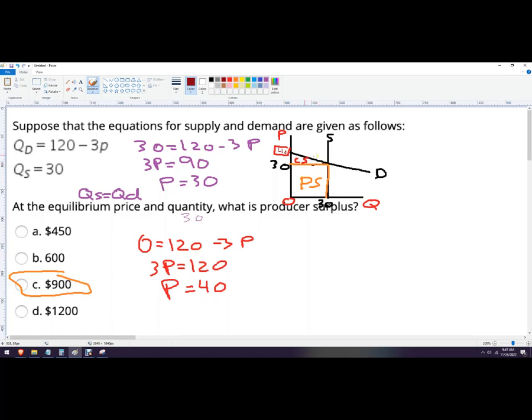So the consumer surplus is the area of this triangle. So if I were to write it all out, it would be 40 minus 30. It's the difference between what they're willing to pay and what they actually pay. And I'm going to multiply that part by 30, the number of units in the market. So this is 10 times 30. That's 300 divided by 2, and 150 is the consumer surplus.